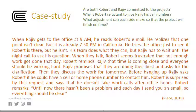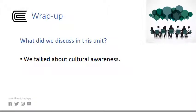Let's answer the questions. Are both Robert and Rajiv committed to the project? Why is Robert reluctant to give Rajiv his cell number? What adjustment can each site make so that the project will finish on time? Wrap up: What did we discuss in this unit? We talked about cultural awareness.